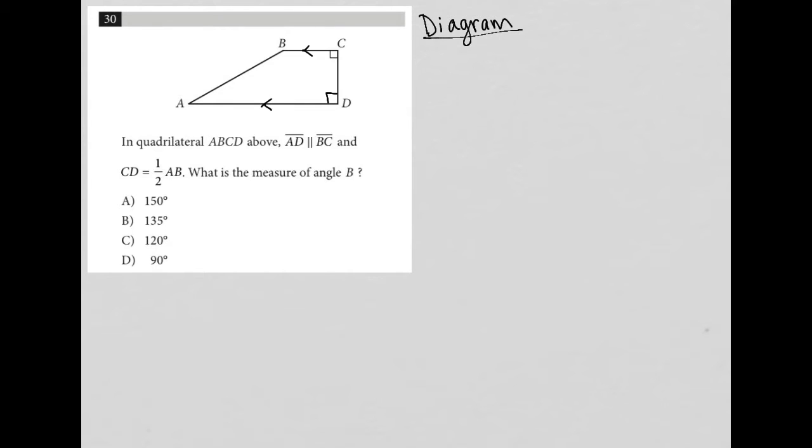I also can tell based upon the rules of parallel lines and transversals that angle A plus angle B is supplementary. So those two things must add up to 180 degrees. And let's see, what else are we told about this diagram?